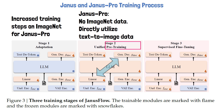The third stage is supervised fine-tuning on instruction tuning data, which comprises dialogues and high-quality text-to-image samples. In this stage, the image understanding encoder is also trained, and there is no change in the process between Janus and Janus Pro.